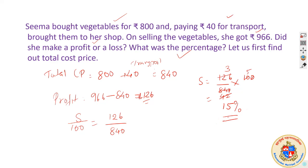So we simply could solve it. 126 rupees against 840 as the cost price, into 100 — the basic formula. But we reached that formula by our knowledge of comparison of ratios.